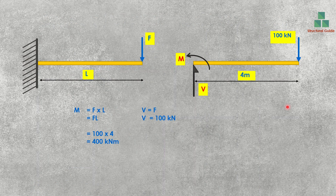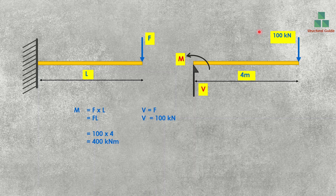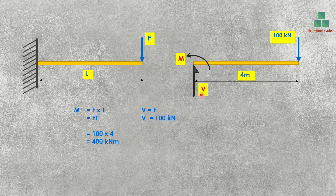Here we have considered a point load at the edge of the cantilever. The span of the cantilever is L and the force is F. In this example we have also considered specific values so you can understand correctly. The force is 100 kN and the length of the cantilever is 4 m. Since we have no other support, the shear force will be equal to the support reaction, so we need not calculate support reaction separately.